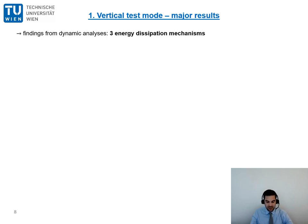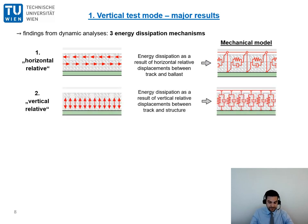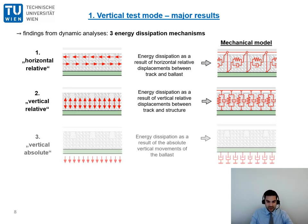And coming directly to the answer at this point, the dynamic analyses revealed that there are in fact three damping or energy dissipation mechanisms which occur in the ballasted track. These three energy dissipation mechanisms are related to different movements or kinematics of the ballasted track. Well, the first mechanism is related to horizontal relative displacements between the track and the ballast bed. Additionally, you can see on the right side a possible mechanical model adjusted to the mechanism. This model uses horizontally oriented spring damper elements. Then the second mechanism is related to vertical relative displacements between the track and the structure. On the right you can see a possible related mechanical model using spring damper elements as well. Now the third and last mechanism is related to the absolute movements of the ballast bed. This mechanism includes the material damping and also friction effects without measurable relative displacements.